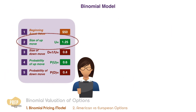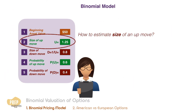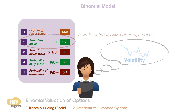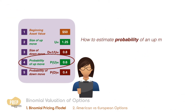Now you may be wondering: how does an analyst estimate the size of an up move and its corresponding probability? The size of an up move depends much on the volatility of the stock, so an analyst estimates the size of the up move based on that. The probability of an up move is calculated based on the size of the moves and the risk-free rate using this formula.